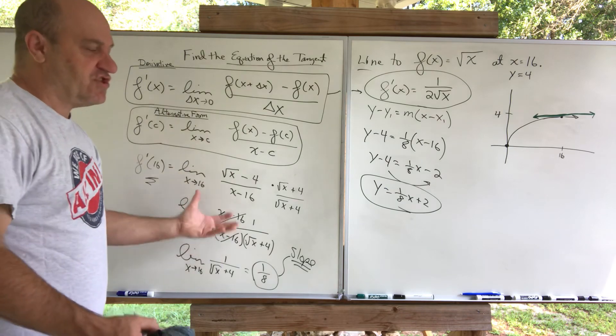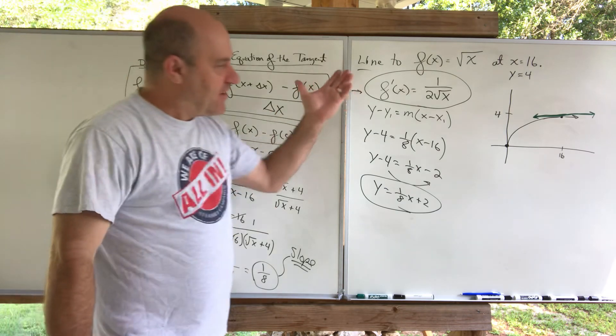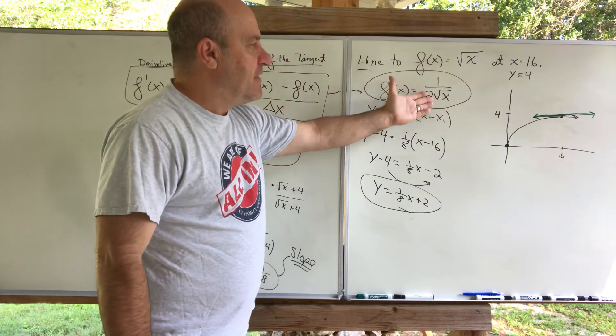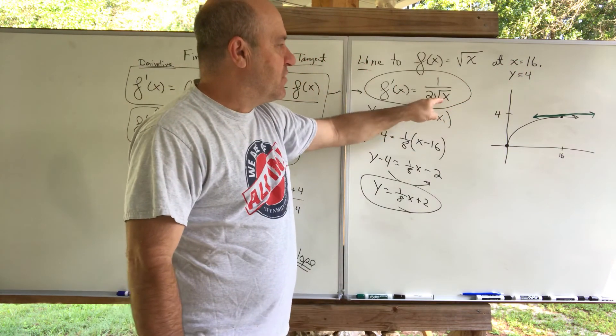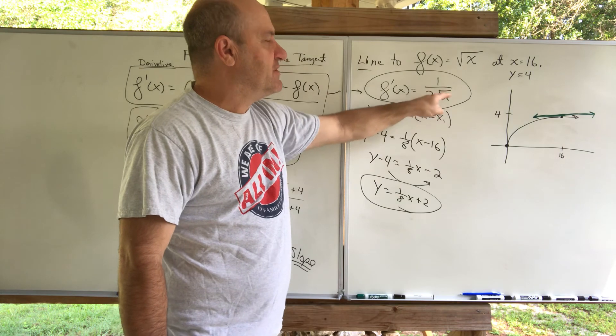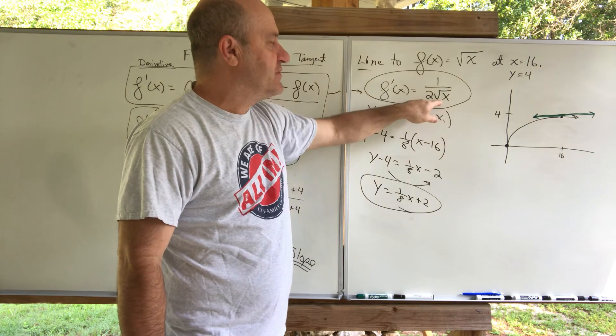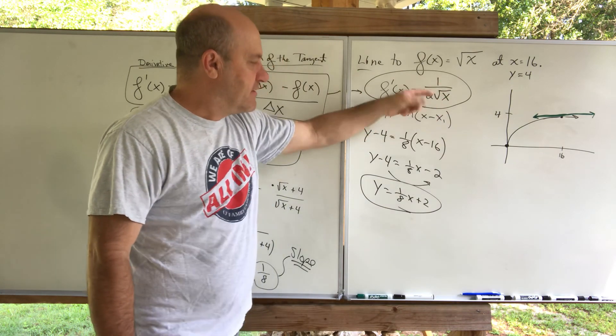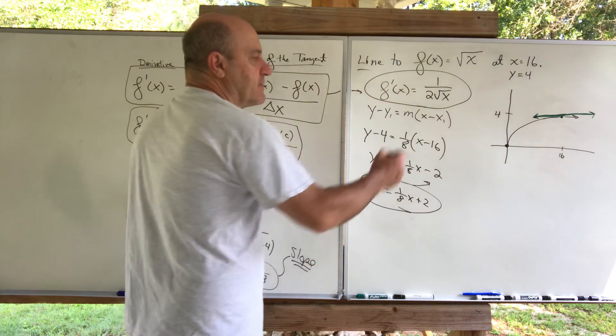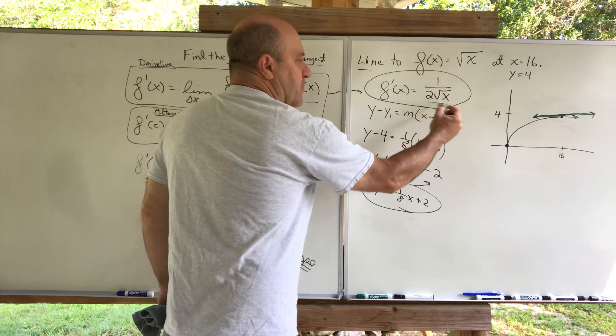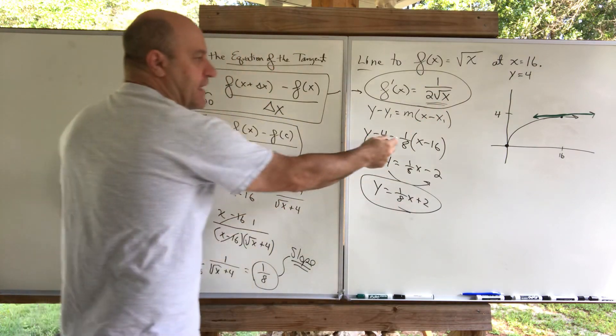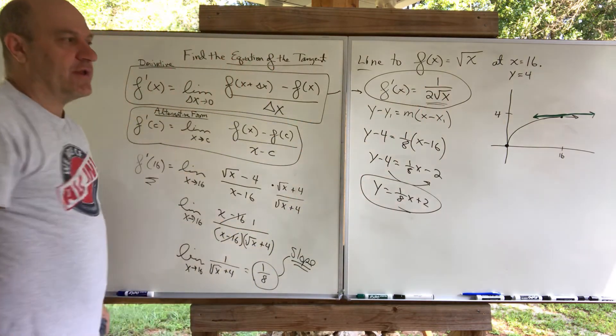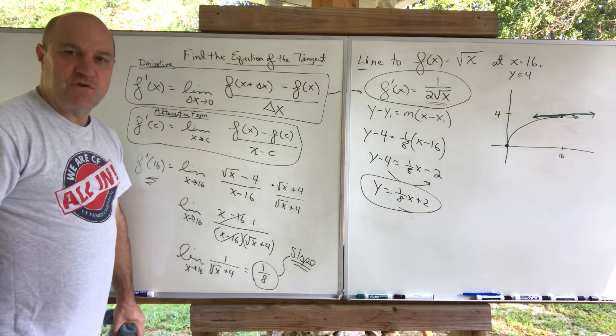But if I knew that this was the derivative, then if I plug in a 16, let me see what happens. If you plug in x equals 16, the square root of 16 is 4. 4 times 2 is 8. I get 1 eighth. Yeah. The slope is 1 eighth. This is the slope of the tangent line at any x. And if you plug in the 16, you do get the 1 eighth. So I wanted to show you that. All right. Good job.